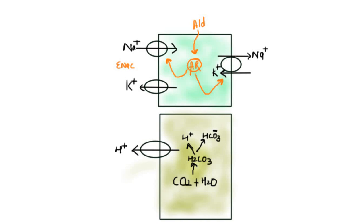Via the sodium-potassium ATPase pump, sodium is pumped from inside the cell to the outside, and potassium is pumped from outside into the inside. The concentration of sodium within the cell decreases while the concentration of potassium increases. As a result, potassium starts to leak through a potassium channel. Similarly, sodium enters the cell via ENaC, and then via the sodium-potassium ATPase pump, sodium is reabsorbed into the blood.